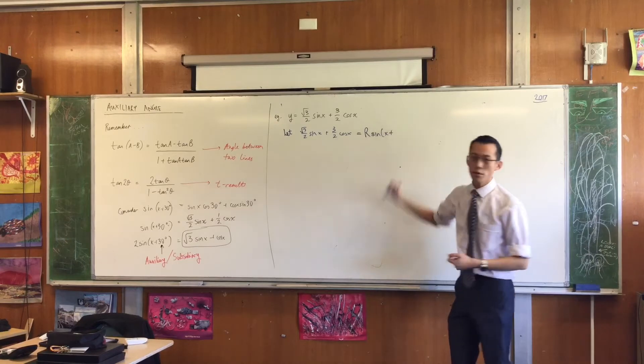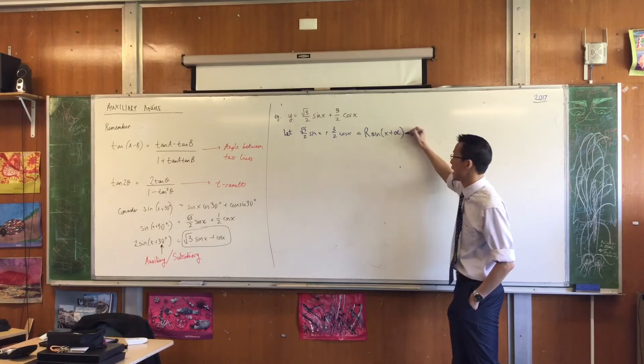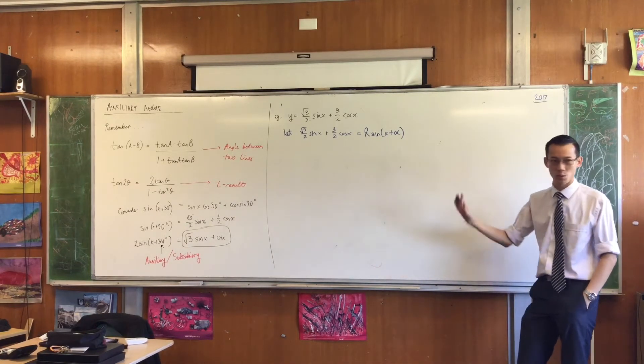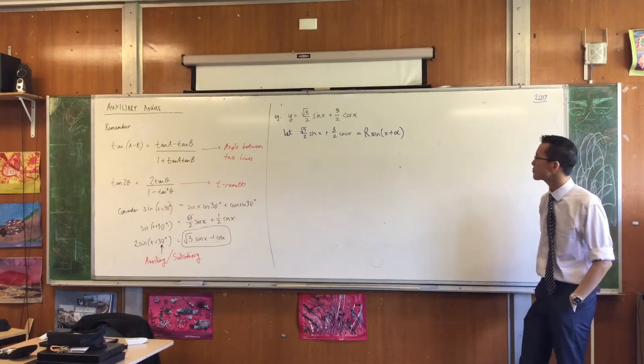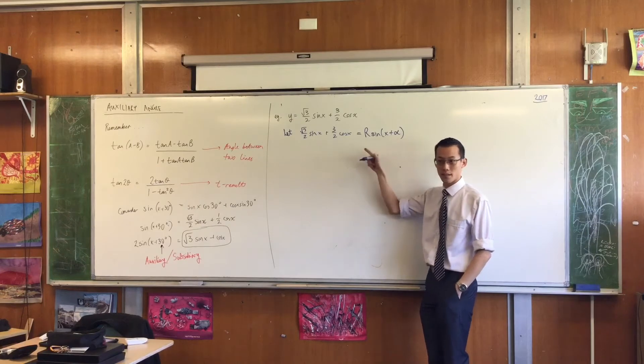And then I know the phase will also change, but I don't know how much. So I also give that a name. Alpha is the most common letter you'll see in there. Theta is also fine, whatever you like. Now I'm predicting that this will happen, and I need to know what these pieces are.